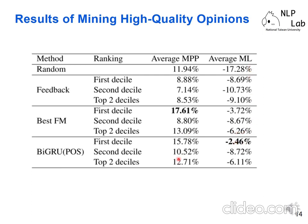We also compare the best performing model with another model that uses only POS features. We find that the MPP is lower than the best FM model, but max loss is also lower than the best performing fusion model. We'll discuss these two models later, but basically we suggest using the model that does not rely solely on POS features, and I will explain that later.